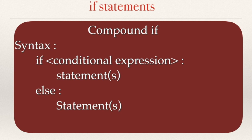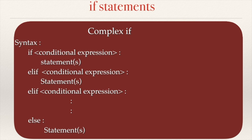The complex if provides a syntax that offers a chain of multiple conditions to be checked, and under each condition a set of statements are placed. This chain ends with an optional else part. The complex if provides multiple paths of execution, out of which only one path is chosen and executed while all other paths are skipped. Conditions under each if are checked, and if found true, statements under that particular if are executed.